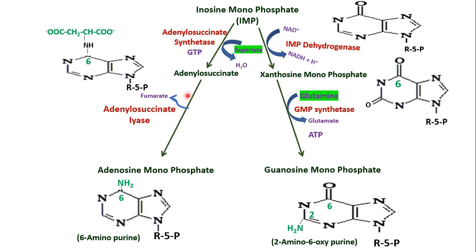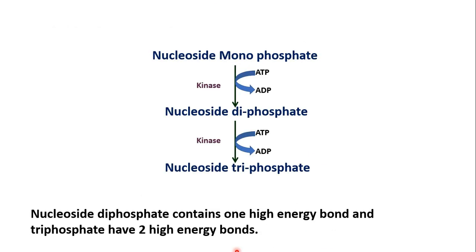Both AMP and GMP can be converted to their corresponding di- and triphosphates to participate in most metabolic reactions. This occurs by transfer of a phosphate group from ATP, catalyzed by nucleoside monophosphate kinase, forming the nucleoside diphosphate. Again, ATP and nucleoside diphosphate kinase are required to form the nucleoside triphosphate.